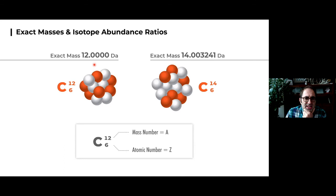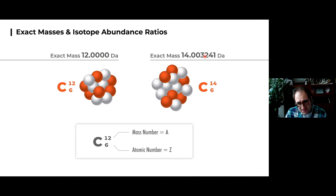Carbon has been defined to have an exact mass of 12 Daltons — that's for carbon-12. There are isotopes of carbon; for example, carbon-14 has a mass of 14.0032. Everything has a slight mass defect relative to carbon-12, either slightly positive or slightly negative.